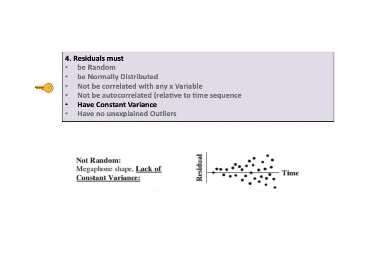Residuals must have constant variance. The spread of the residuals should not increase or decrease over time, or in concert with an increase in an X variable. We should not see a megaphone shape on a scatter plot.